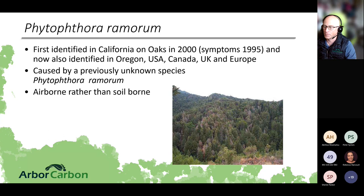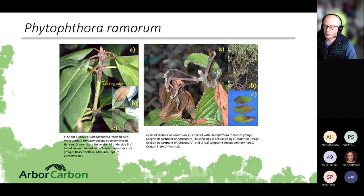Phytophthora ramorum is another threat affecting multiple states and territories. Beyond the well-known soil-borne Phytophthora cinnamomi, there are now airborne Phytophthora species, including P. ramorum. In Australia, one aerial species — Phytophthora fallax — is known, and New Zealand has several. The disease affects large forest tree species but also rhododendrons, and in the US the nursery and plant trade moved it around inadvertently — with some plants showing no symptoms while still carrying and spreading the pathogen.